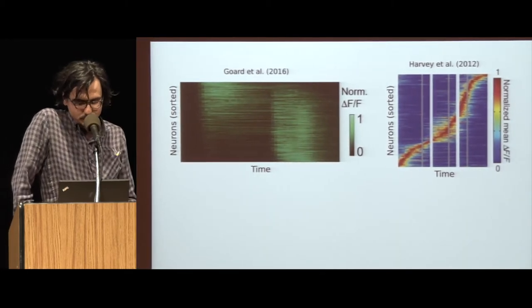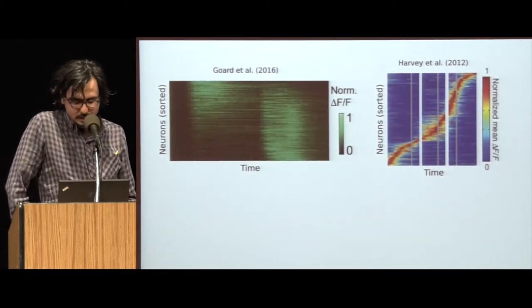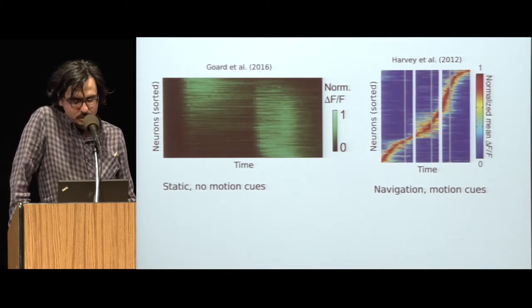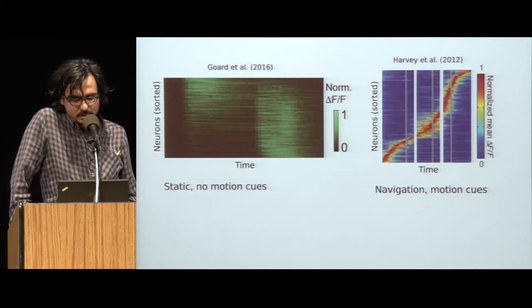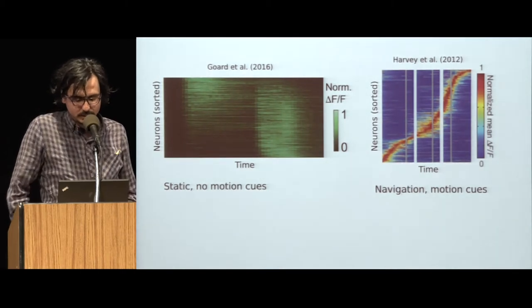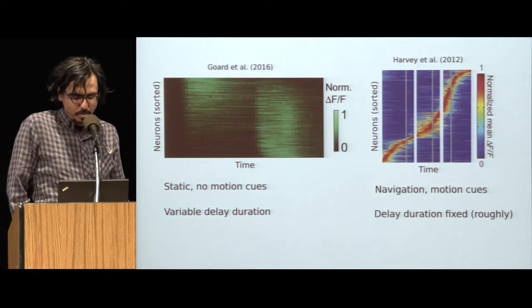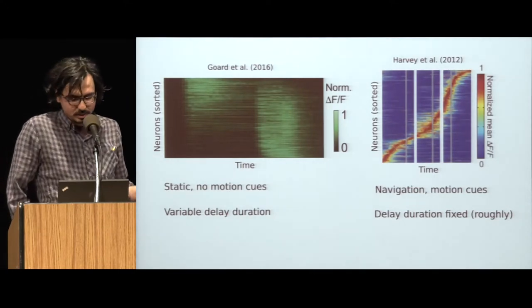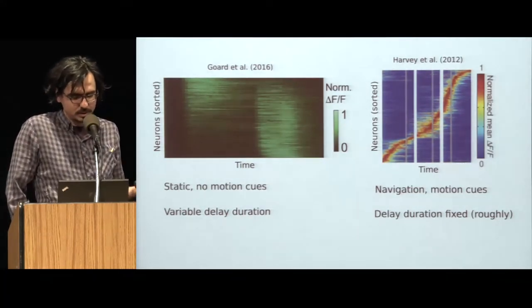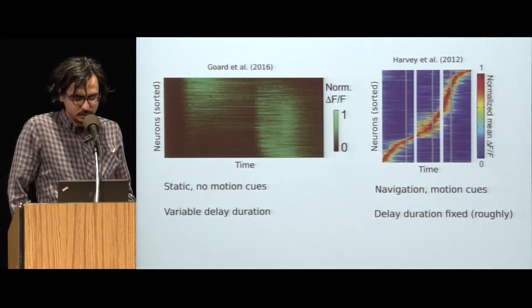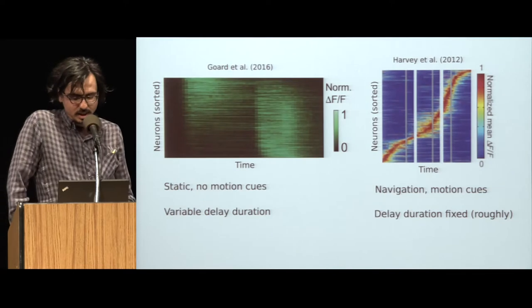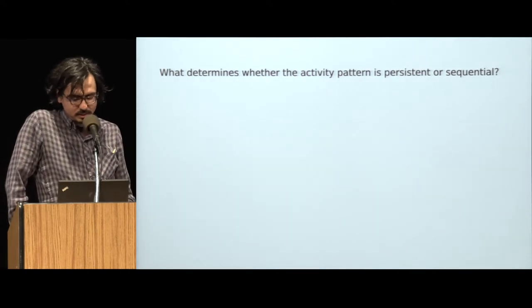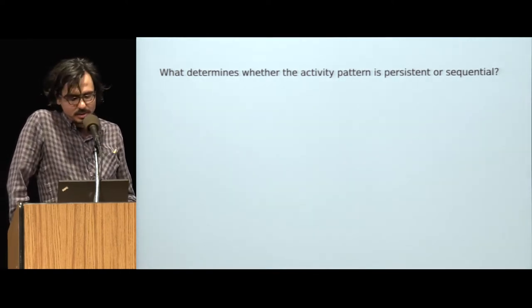Now there were many differences between these two studies that could potentially explain the different activity patterns. For example, on the left, the animal was static, so it didn't receive any motion-related cues, whereas on the right, the animal was doing a navigation task navigating through a linear track. On the left, the delay duration was variable; on the right, it was roughly constant. And there were other differences as well. Each of these factors or a combination of them could potentially explain the observed difference in the activity patterns. So the question we would like to address is what factors determine whether the activity pattern will be persistent or sequential.